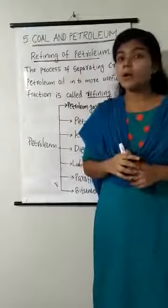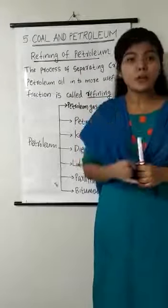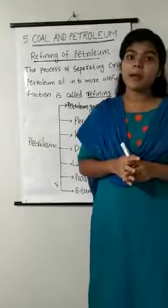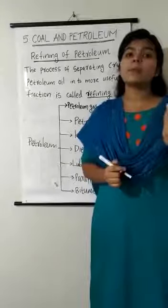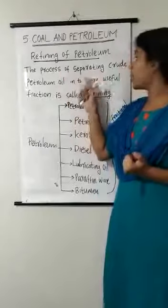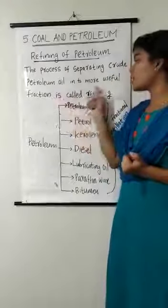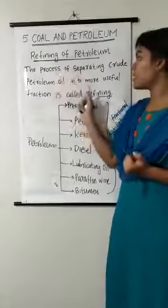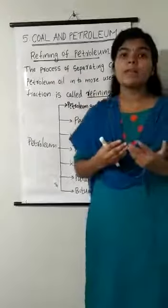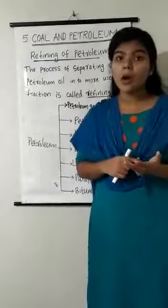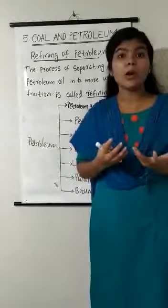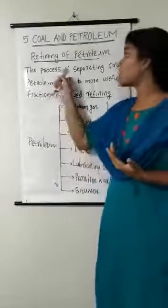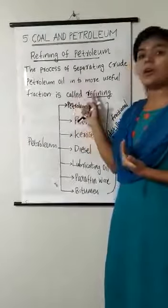The oil that we extract from the earth is also known as crude oil or petroleum. This crude oil is a mixture of a large number of hydrocarbons and unwanted impurities, so we need to separate it. The process of separating crude petroleum oil into more useful fractions is called refining.